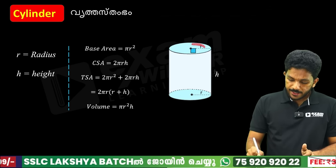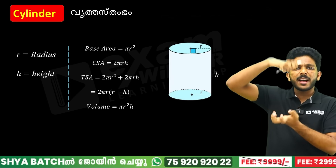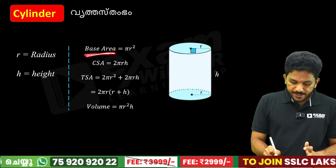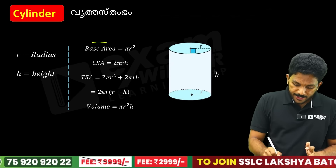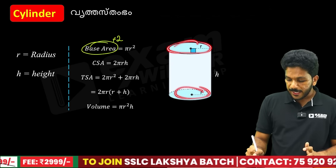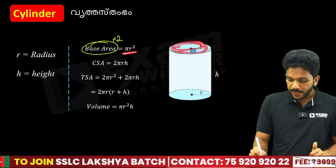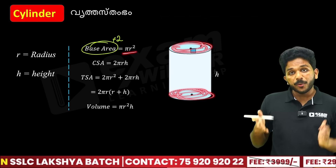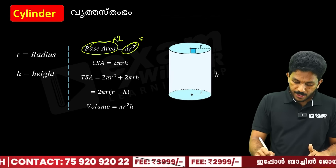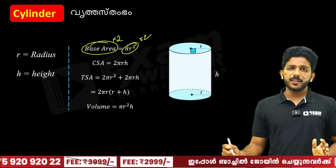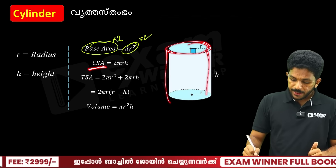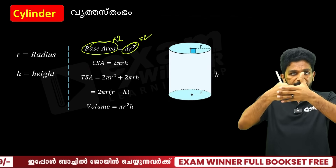The base area of a cylinder is πR². There are two circular bases, so total base area is 2πR². The CSA (curved surface area) is the area of the side surface.